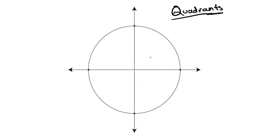The circle is on a graph, so there will be coordinates and all the rules of reflection still apply. Let's take a coordinate and give it the point x comma y. Now what would happen if we reflected this across the y-axis? If anything reflects over the y-axis, then its x-coordinate becomes negative.